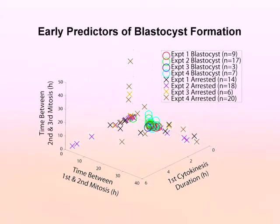It was demonstrated that embryos which reached the blastocyst stage, indicated by the circles, exhibited tight parameter clustering, while arrested embryos, shown as X's, did not.